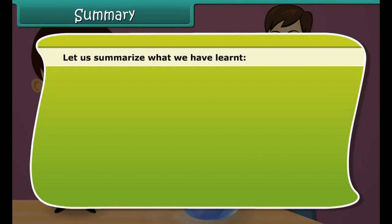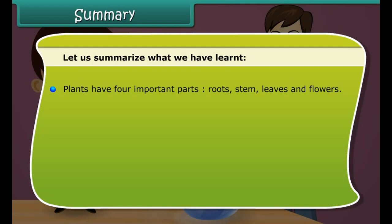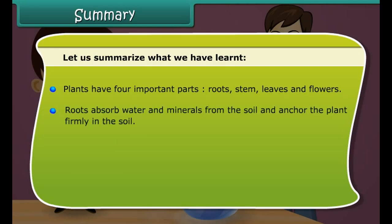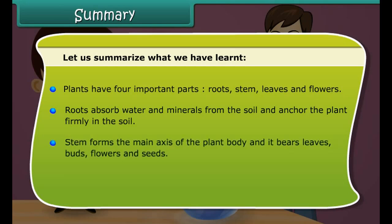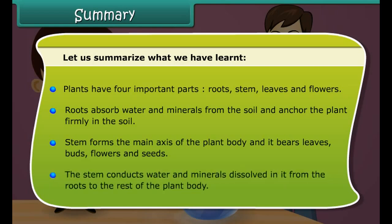Let us summarize what we have learned. Plants have four important parts: roots, stem, leaves, and flowers. Roots absorb water and minerals from the soil and anchor the plant firmly in the soil. The stem forms the main axis of the plant body and bears leaves, buds, flowers, and seeds. The stem also conducts water and minerals from the roots to the rest of the plant body.